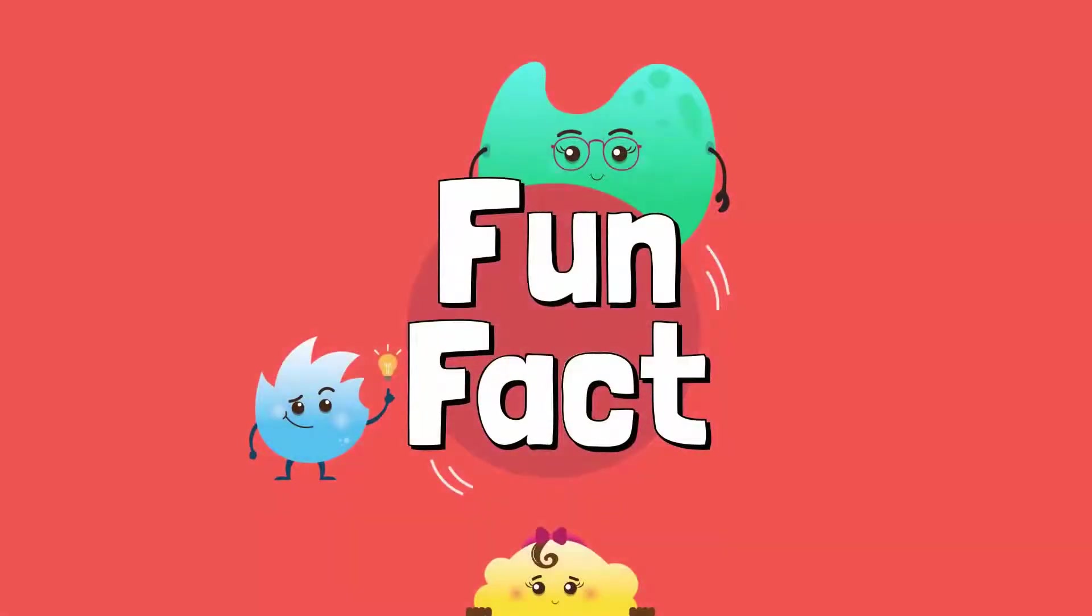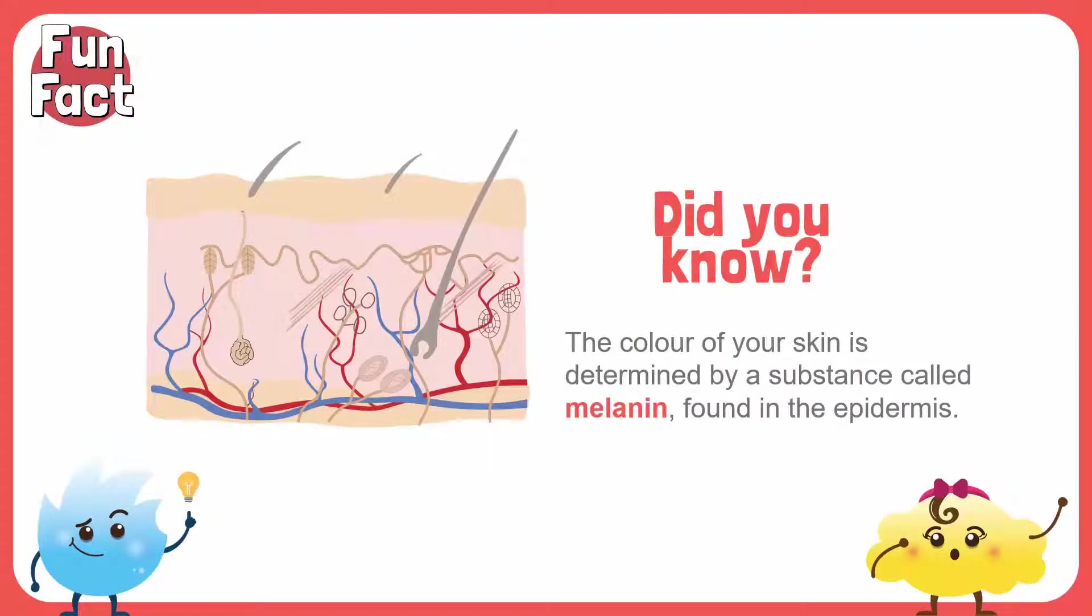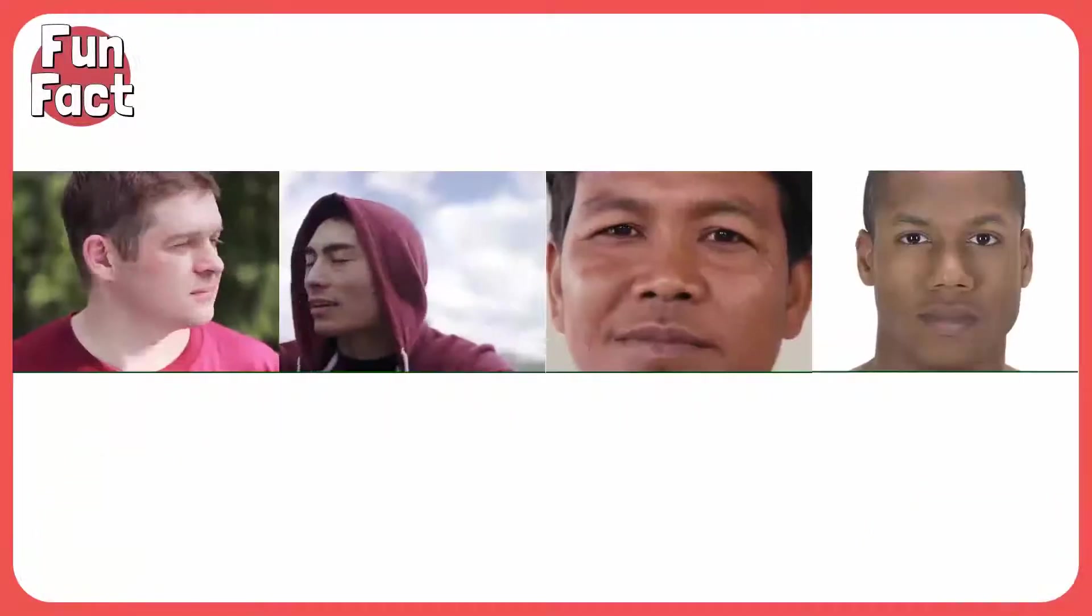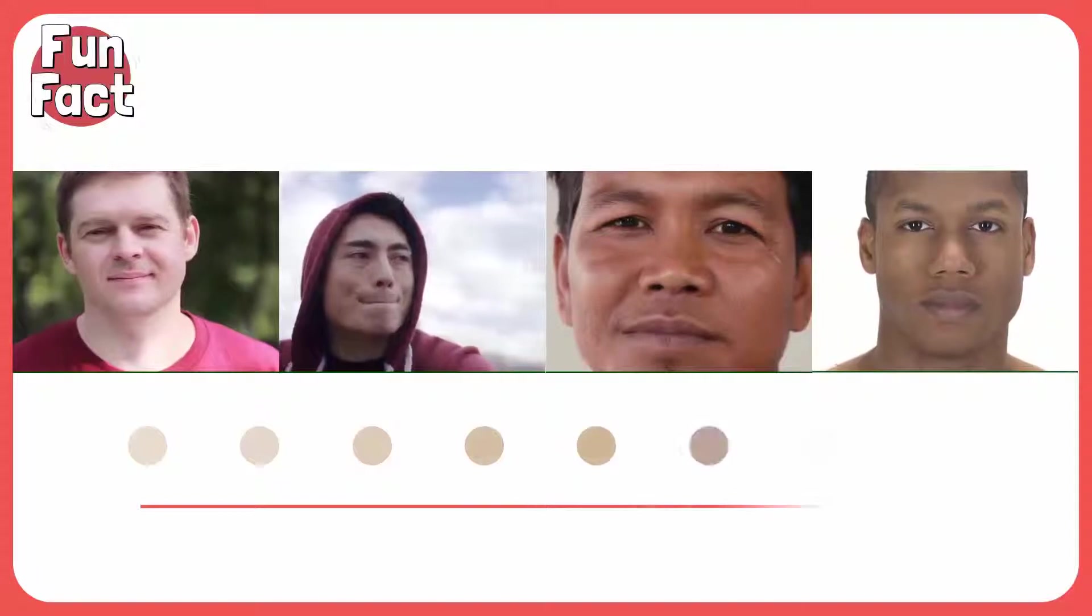Here's a fun fact. Did you know the color of your skin is determined by a substance called melanin found in the epidermis? The more melanin your skin has, the darker your skin will be.